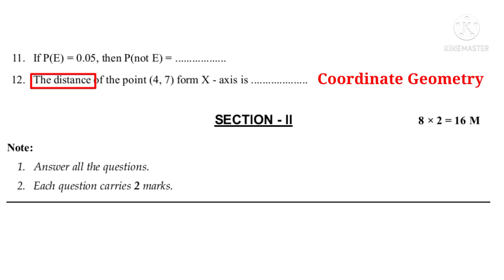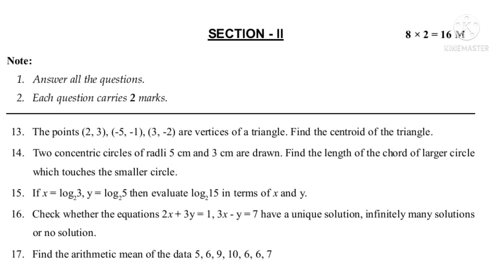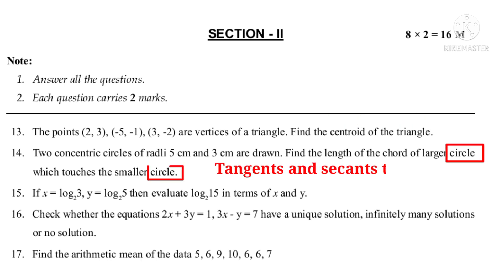Now let us see Section 2. Answer all questions, each carries 2 marks, 8 questions, total 16 marks. Question 13: The points (2, 3), (−5, −1), (3, −2) are vertices of a triangle. Find the centroid of the triangle — from Coordinate Geometry. Question 14: Two concentric circles of radii 5 cm and 3 cm are drawn. Find the length of the chord of the larger circle which touches the smaller circle — from Tangents and Secants to a Circle.